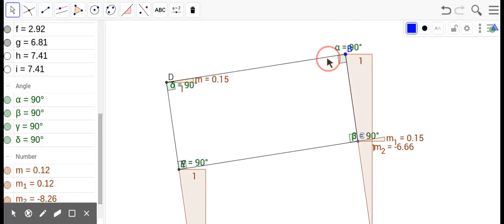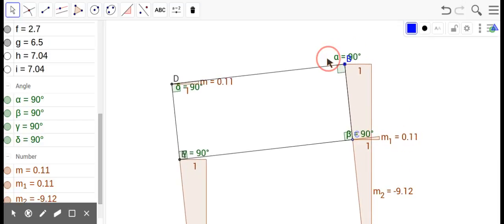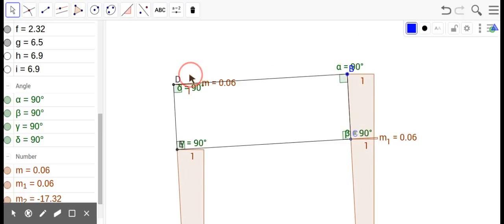Opposite sides are parallel—that just makes it same properties of a parallelogram. What distinguishes this is that we have all angles are congruent. Another way of saying that: all angles are 90, because they've got to add up to 360.